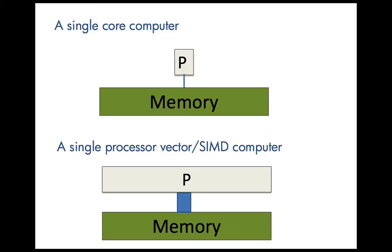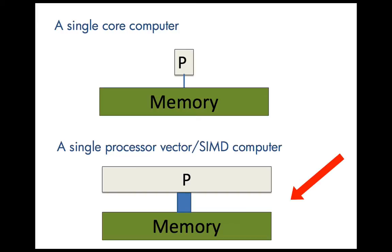Let's talk more about the details of computer architecture from a very high level. The original machines had a single processor and a memory, and the processor processed data which it fetched from memory and put back into memory. A vector machine, or a SIMD machine, is really very similar, except that multiple words of data are fetched at a time, and multiple operations of the same kind are performed on multiple data — single instruction, multiple data. For example, in a vector variant of a SIMD machine, you might load a 16-element vector from memory, or add two 16-element vectors stored in vector registers in the processor.